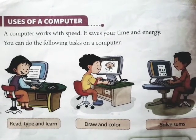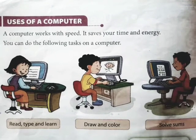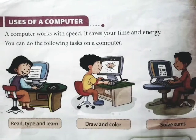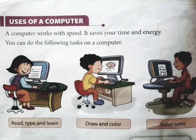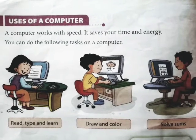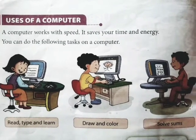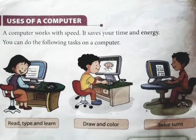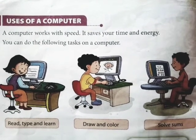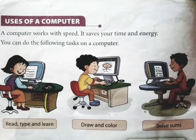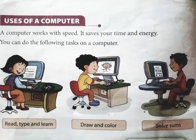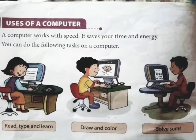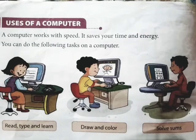You can see the second picture — the picture in the middle. A boy is sitting and he is drawing something on a computer. After drawing, he is coloring. So you can draw and color on a computer. In the third picture, you can see he is doing some calculations — he is solving sums.